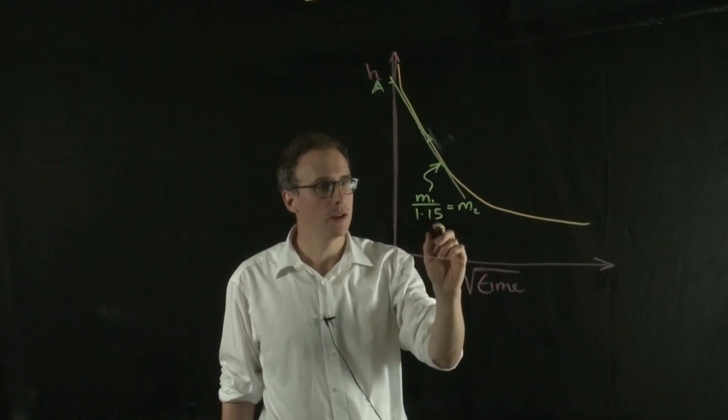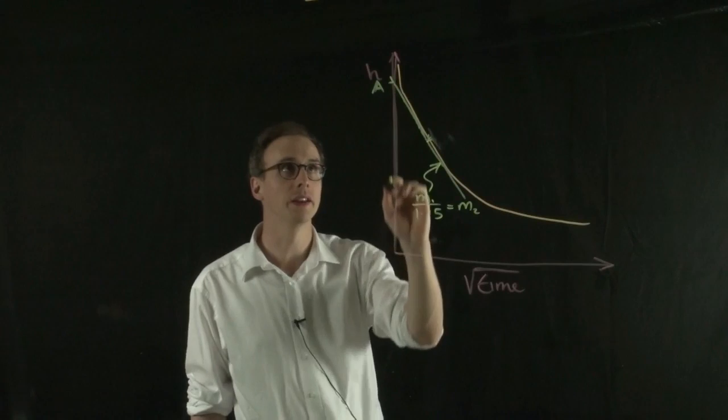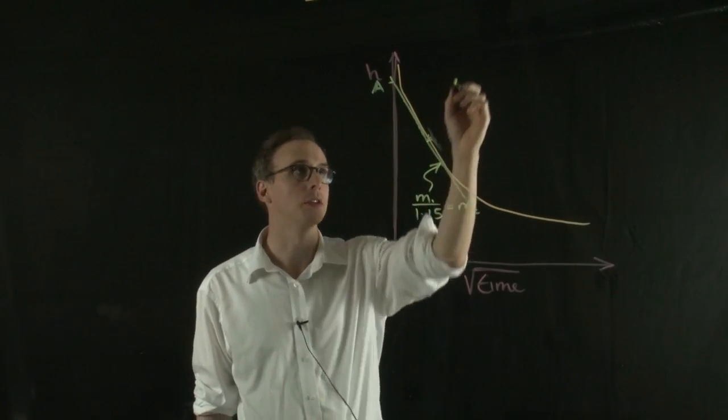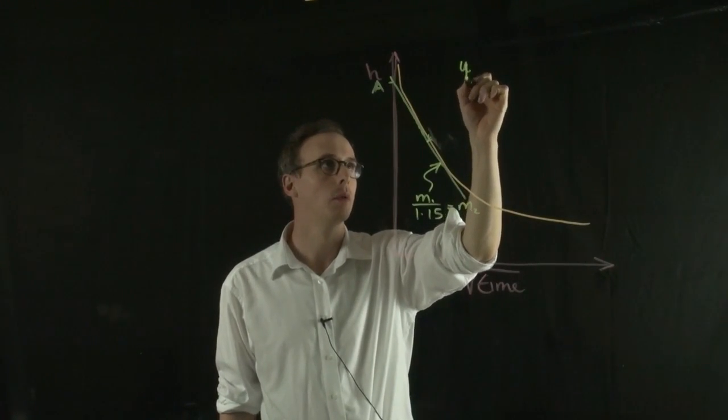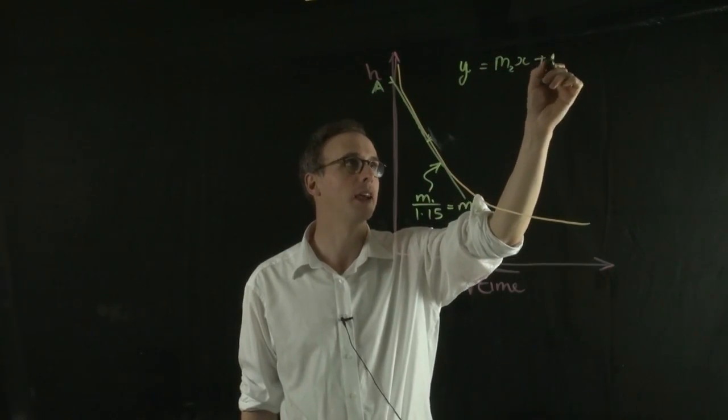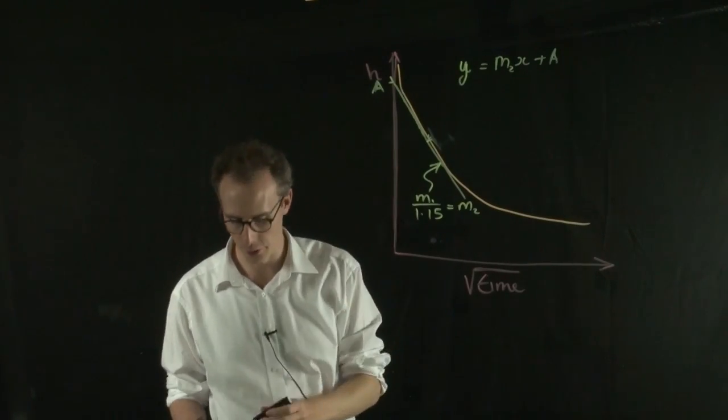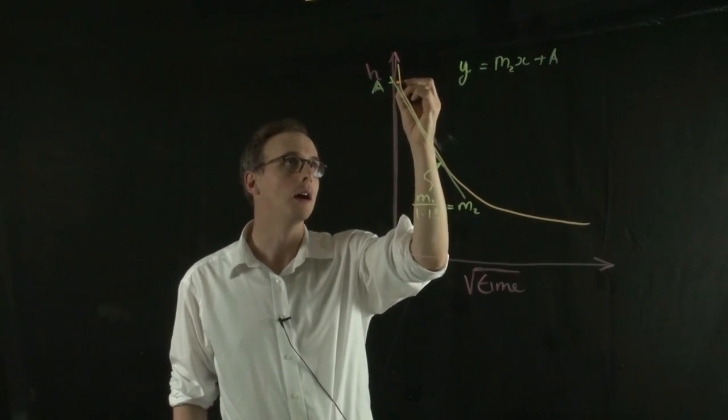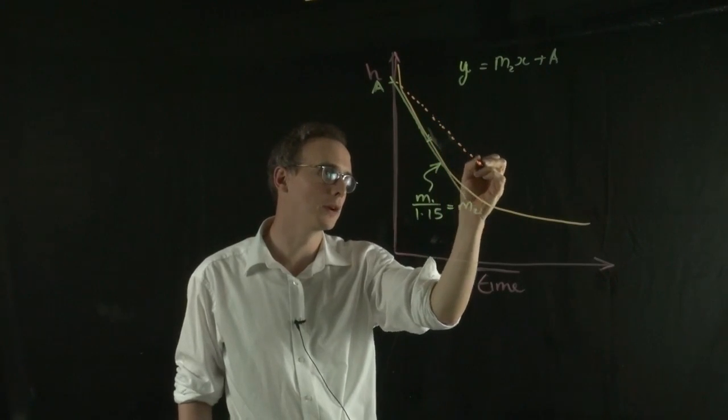So if I draw a new line with the equation where M2 is now my gradient, but that has A as the intercept, so the equation of my line will be y equals M2 x plus A. If I take that as my new line and I draw that onto my diagram, I'll get a line that looks something like this with a shallower gradient.